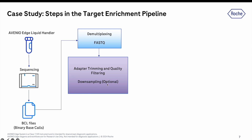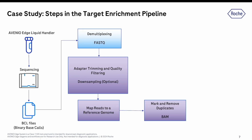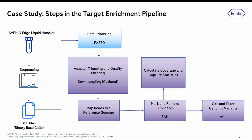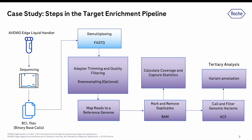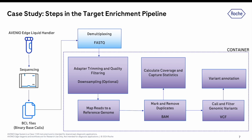In our example, downsampling was also performed to make the samples more comparable and normalize the coverage — I've marked this as optional, but in our case study we do downsample to around 60 million reads. Next, we map these reads to a reference genome, in this case GRCh38. This step is also known as alignment; we get a BAM file, which we then mark and remove duplicates from. At this stage we also calculate coverage and capture statistics like on-target rate and fold-80. The next step is to call genomic variants and filter them based on variant quality, which constitutes secondary analysis, followed by variant annotation that falls under tertiary analysis.